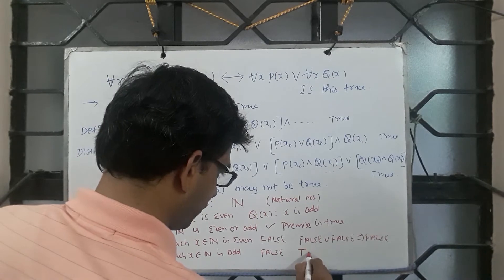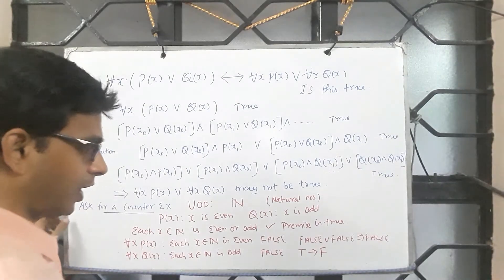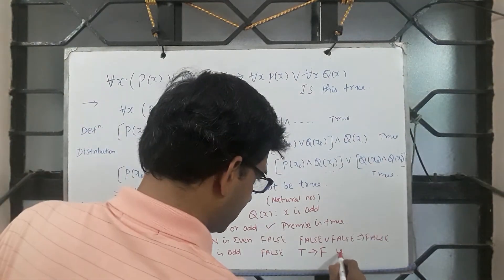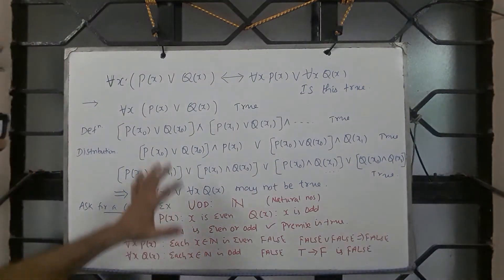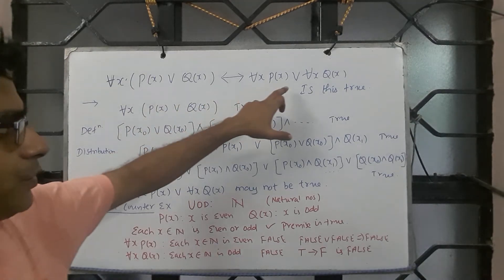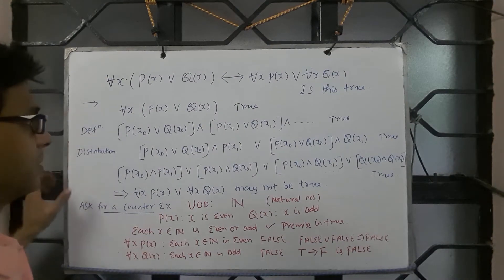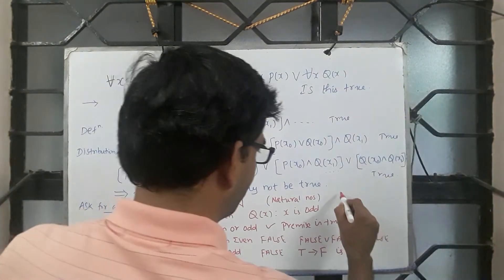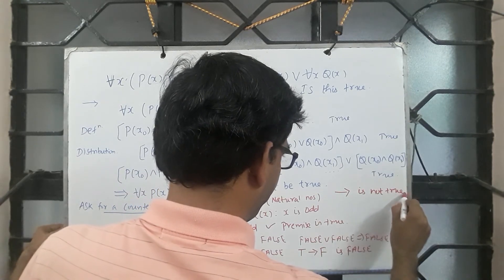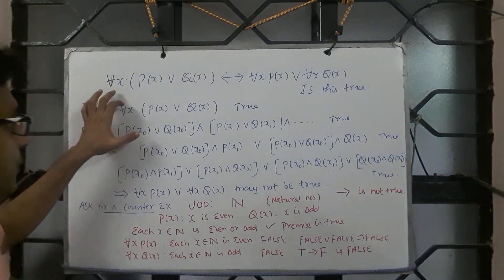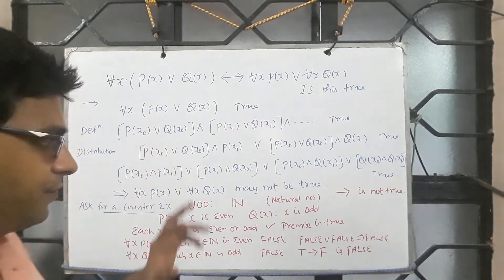Which means premise is true, conclusion is false. So if you look at the truth table of implication, true implies false is false. So here is a counter example satisfying the premise but failing to satisfy the conclusion. Therefore the claim is false. So the forward direction is not true. For all x, P(x) or Q(x) implies for all x P(x) or for all x Q(x) is false.